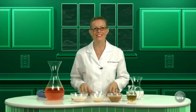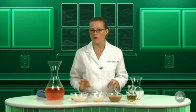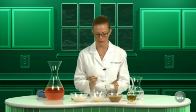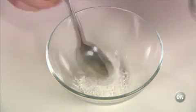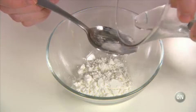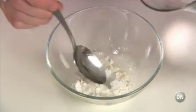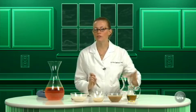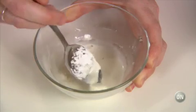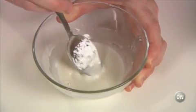We can make a really fun non-Newtonian fluid with just cornstarch and water. You add the cornstarch in small amounts, and then slowly stir in water. You use about one and a half to two parts starch to each part water. As the mixture thickens, you'll notice a change in the way that it behaves.